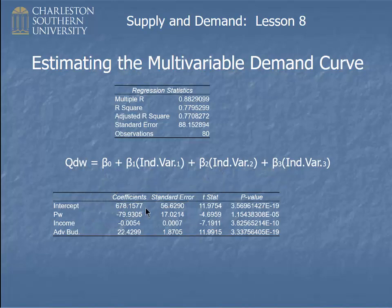These numbers, this is the constant term. So beta zero is going to be this thing, 678. Beta one is going to be minus 79.9. Beta two is going to be 0.0054 minus, right? And beta three is going to be this thing, positive 22.43. So now I'm just going to put those numbers into my equations.